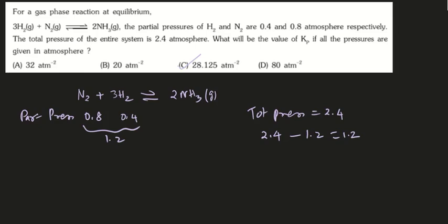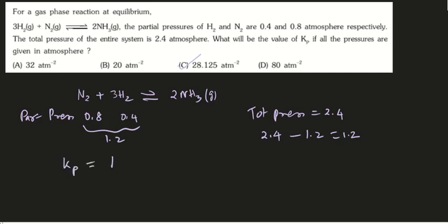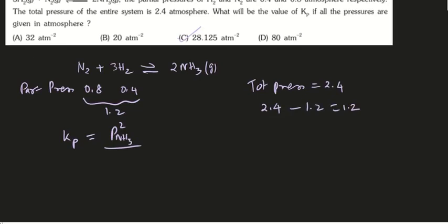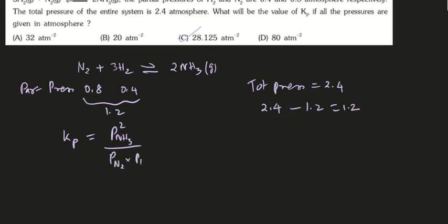Now, to calculate Kp, we write: 1.2 squared, divided by 0.8 into 0.4 cubed.